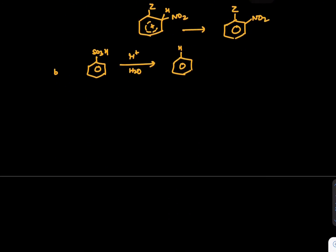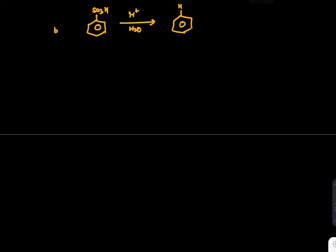So what kind of groups will be easily replaced by hydrogen? So it can be SO3H or it can be 2 degree or 3 degree groups, which can form a stable carbocation. They can also be removed by this reaction.